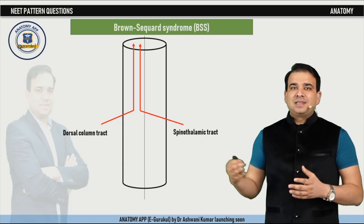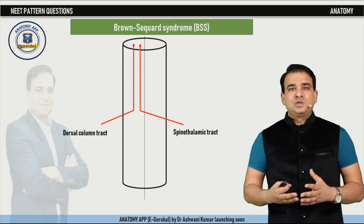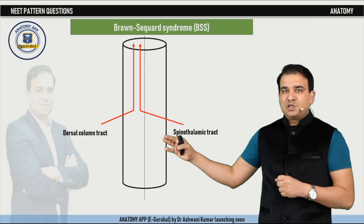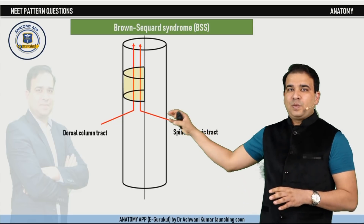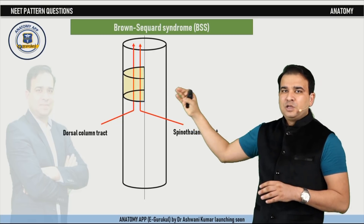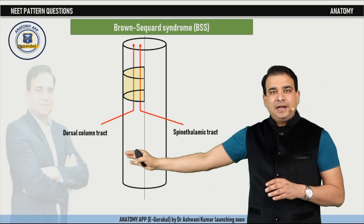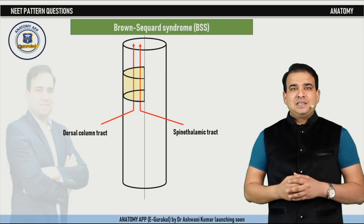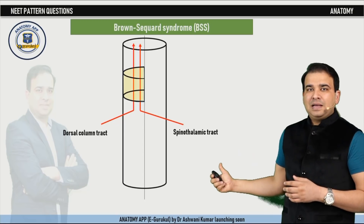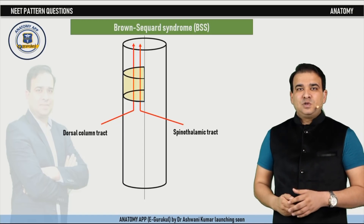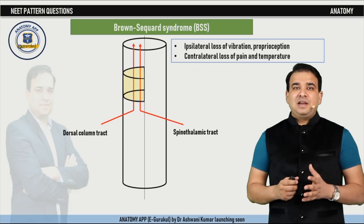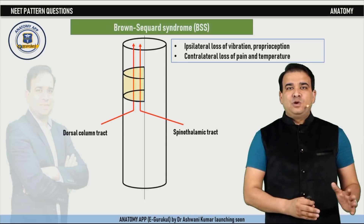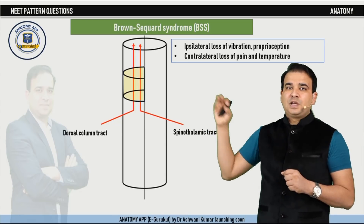The dorsal column tract carries fine touch, conscious proprioception, vibration, and stereognosis — so there will be loss of these sensations below the level of the lesion on the ipsilateral side. The spinothalamic tract carries pain and temperature, and because it decussates in the spinal cord, there will be contralateral loss of pain and temperature below the level of the lesion. That is the key point in Brown-Séquard syndrome: contralateral loss of pain and temperature below the level of the lesion.